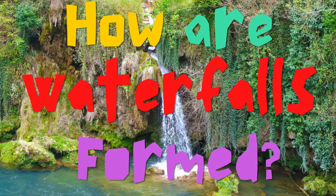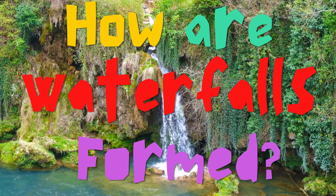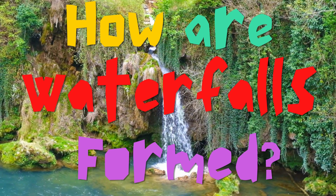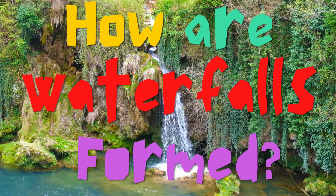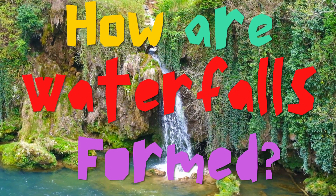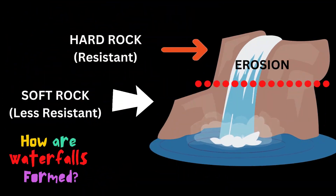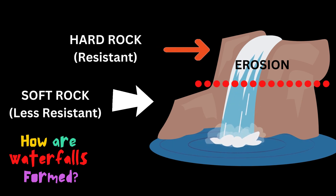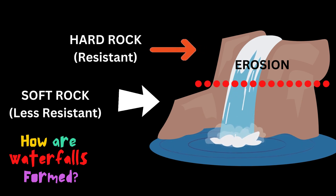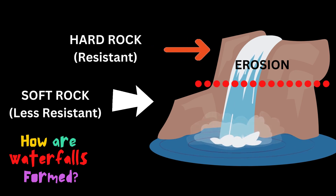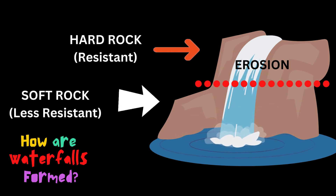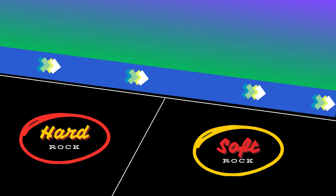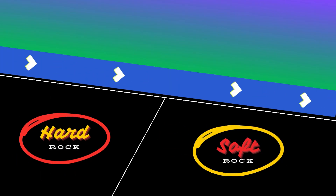In this geography snippet we look at how waterfalls are formed by rivers. A waterfall is formed through a process of erosion as water flows over different layers of rock. Here's how it happens: water flows over layers of rock.